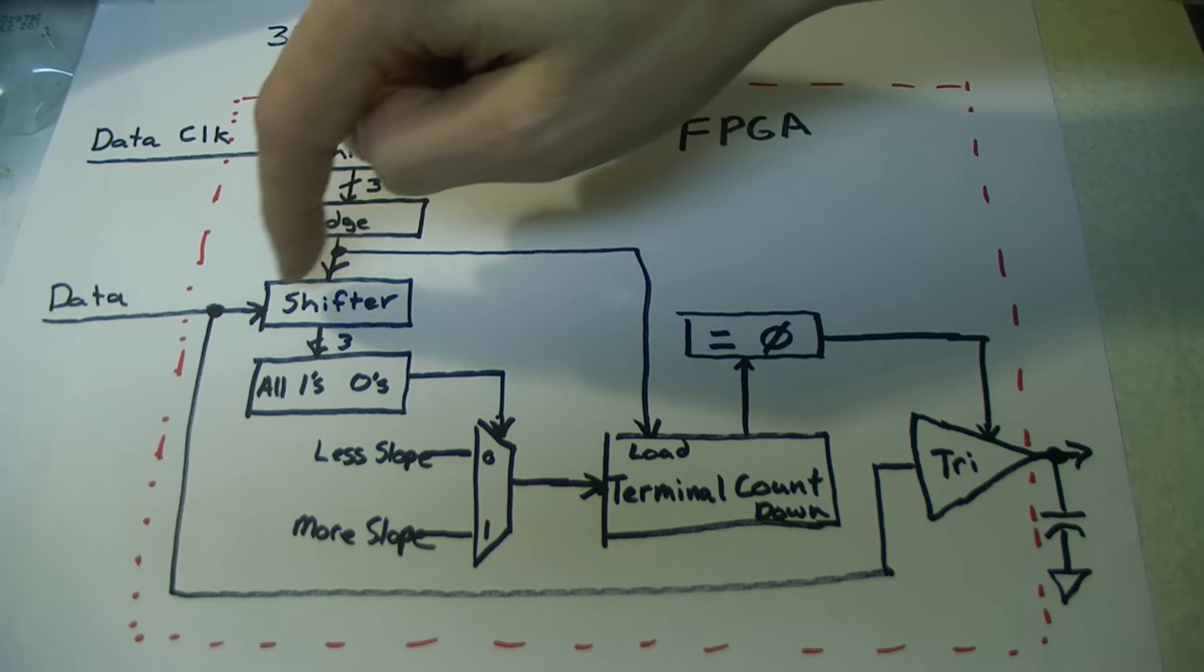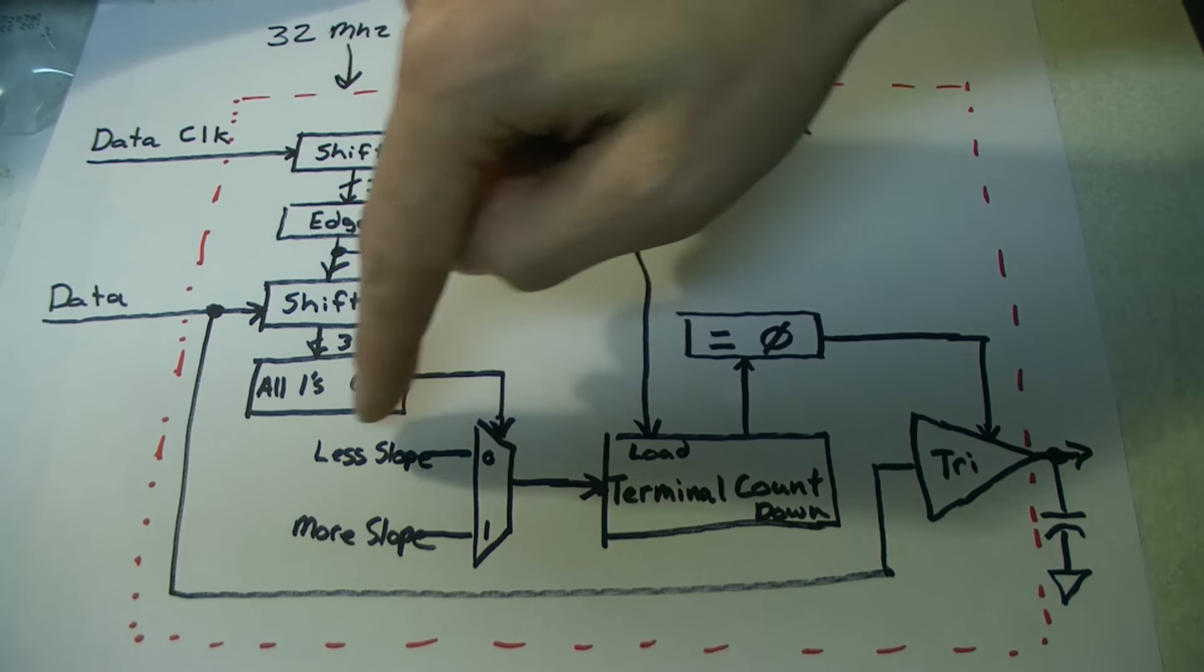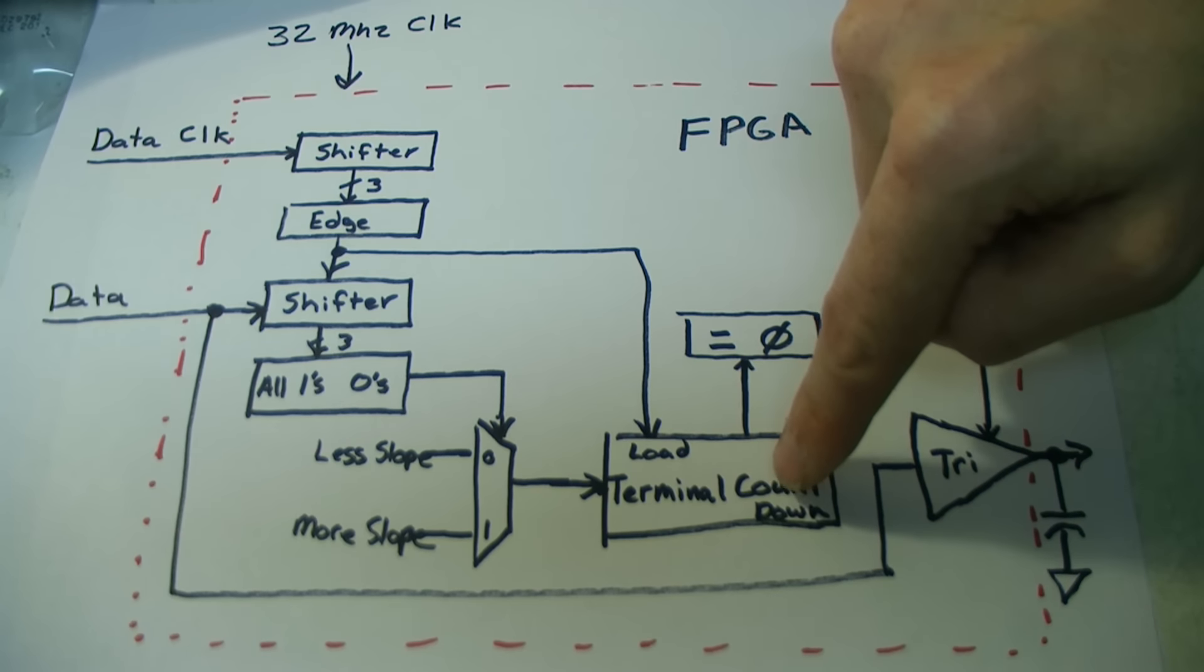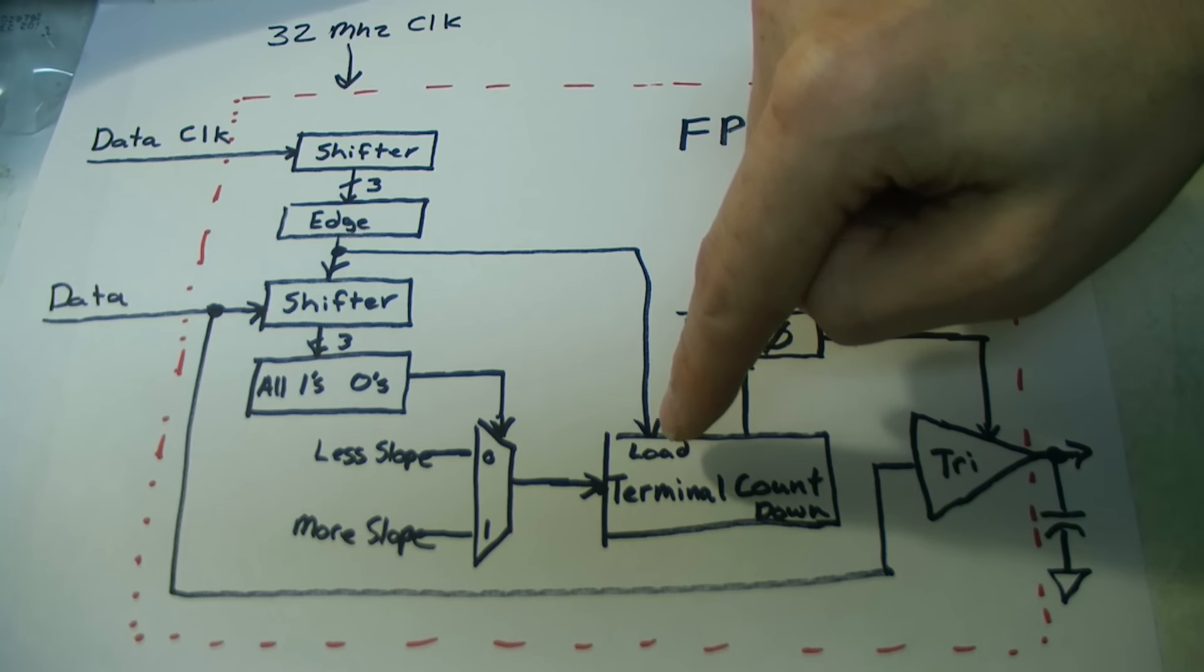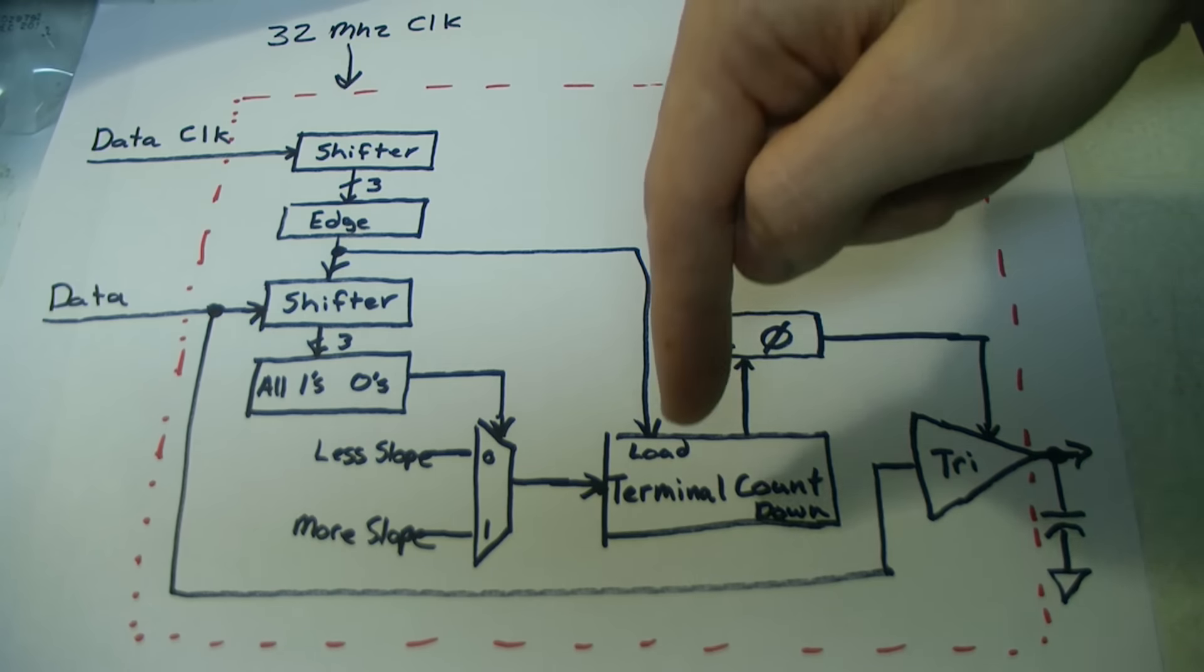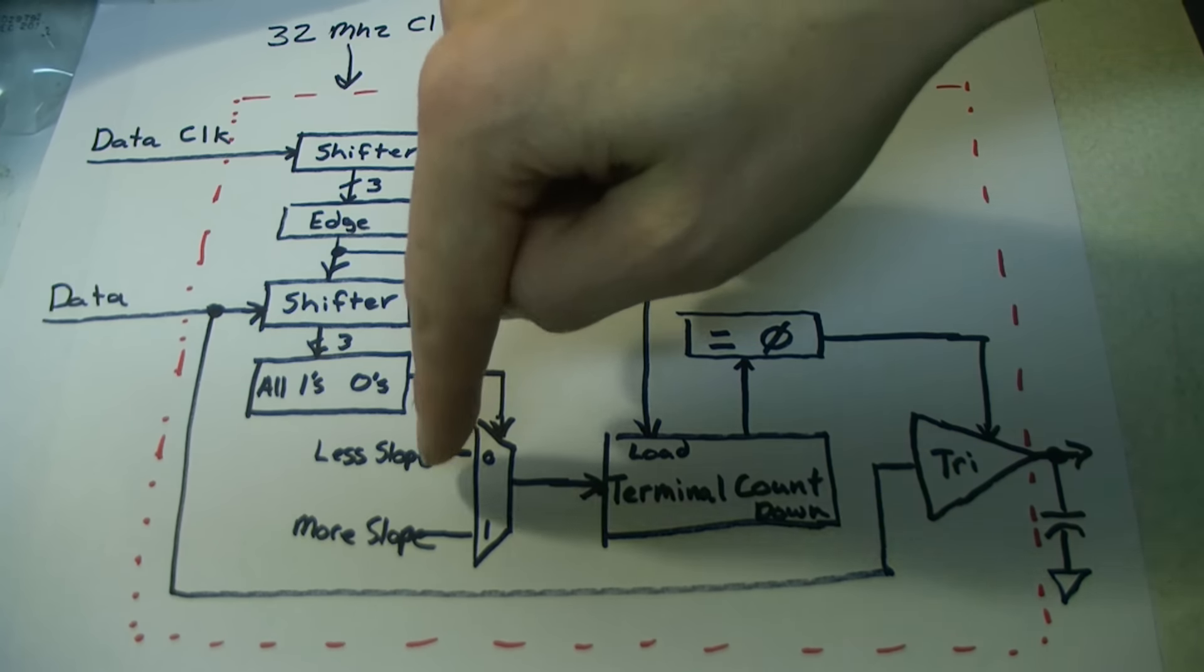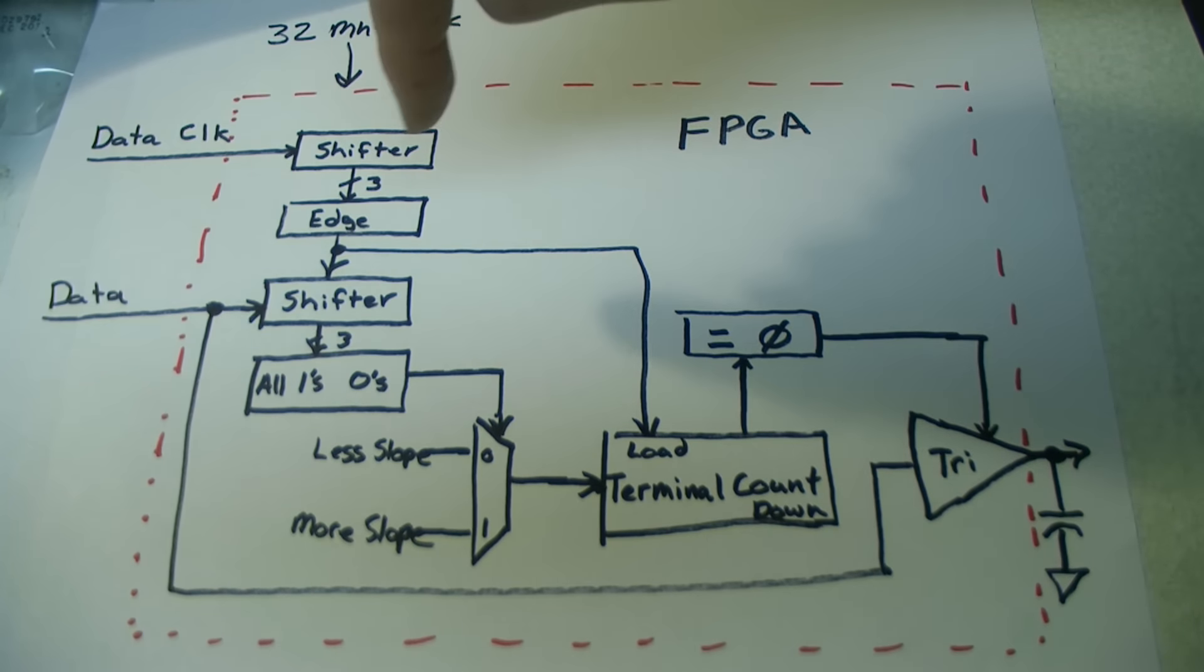If we had three 0s or three 1s in a row, it would change this MUX which had constants attached to it which would load a terminal counter. The terminal counter would get loaded once every falling edge and would start counting down to 0 and then stop. And if the slope was more, the value in here would be more. If it was less, this value would be loaded with a smaller value.